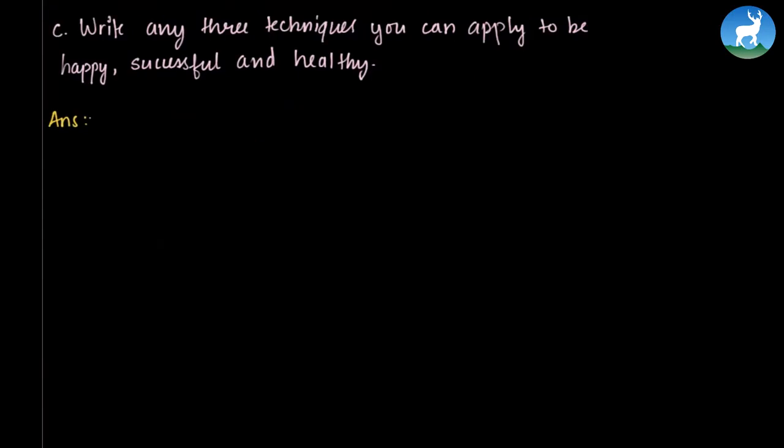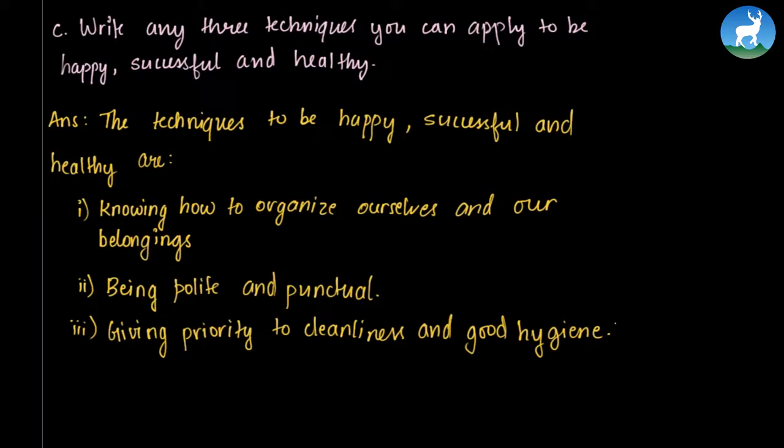Write any three techniques you can apply to be happy, successful, and healthy. In order to be happy, successful, and healthy, we must know how to organize ourselves and our belongings. The second technique is by being punctual, hygienic, polite, and clean. So the techniques to be happy, successful, and healthy are knowing how to organize ourselves and our belongings, being polite and punctual, giving priority to cleanliness and good hygiene.